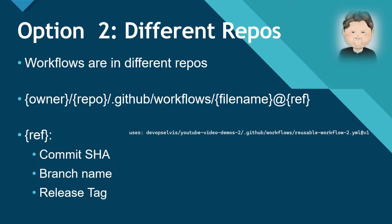You have three options: a commit SHA, a branch name, or a release tag. In the example to the right, you can see we are referencing a workflow file using a release tag. Now that we've covered the concepts, let's go see this in action — yes, pun intended.